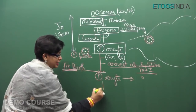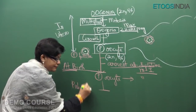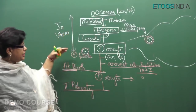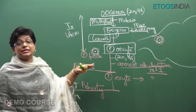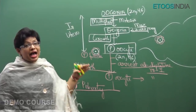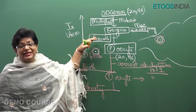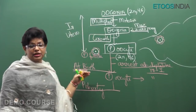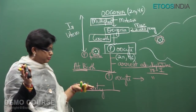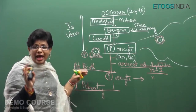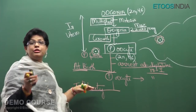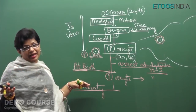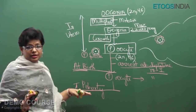Nothing happens from birth till puberty. All these primary follicles, which are maximum at the uterine stage, keep regressing. They number about 7 million at 22 weeks of pregnancy, then reduce to about 2 to 4 lakhs at birth. By puberty, only 60,000 to 80,000 remain in each ovary, totaling about 1.2 to 1.6 lakhs across both ovaries.